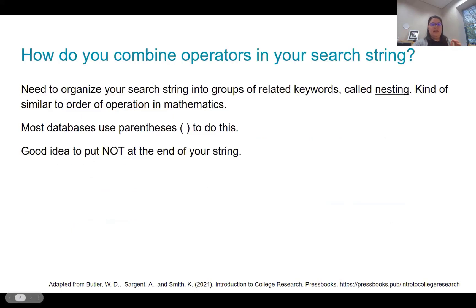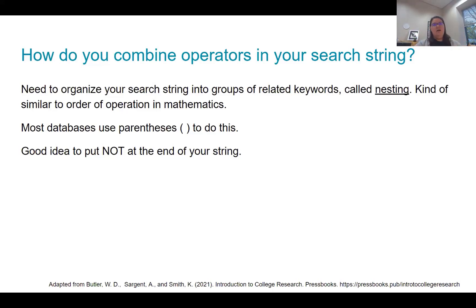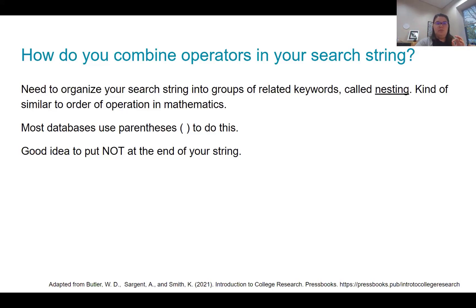So how do you combine all of this? You organize your search string into groups of related keywords — this is called nesting. Think of it like order of operations in mathematics. Most databases use parentheses to group words together. It's typically a good idea to put NOT at the end of your string, because databases read your string from left to right. Unless they see parentheses around specific groups of key terms, they'll just read it straight across and base the order on whatever the next operator is.